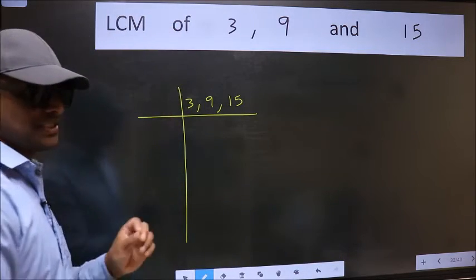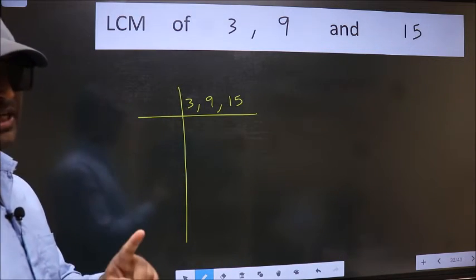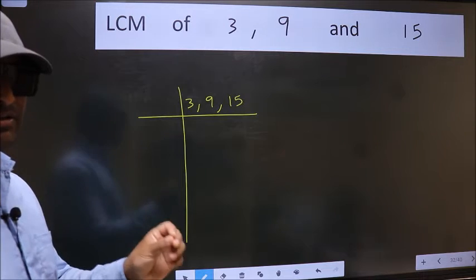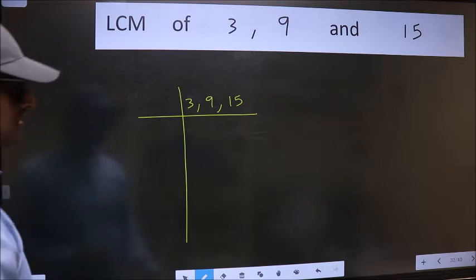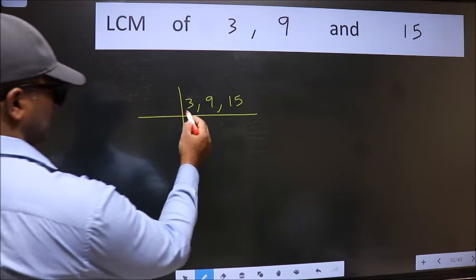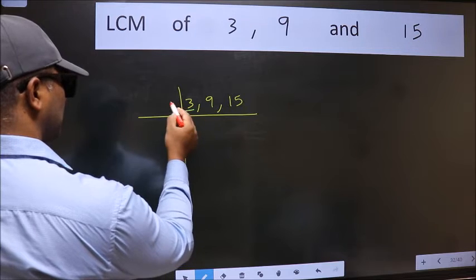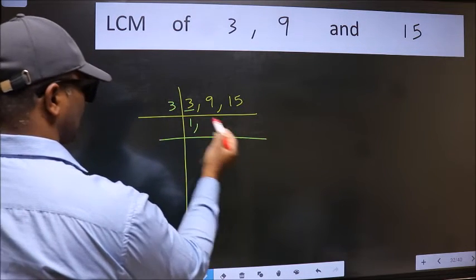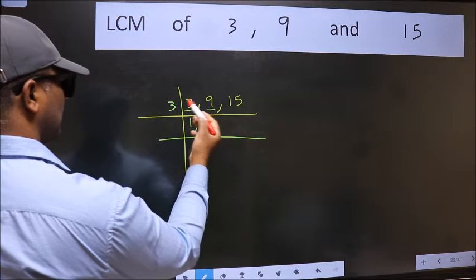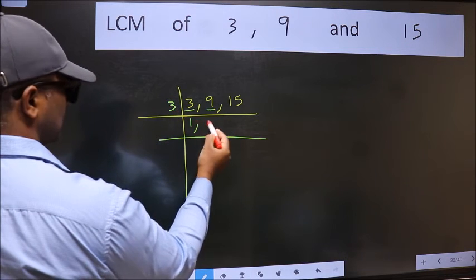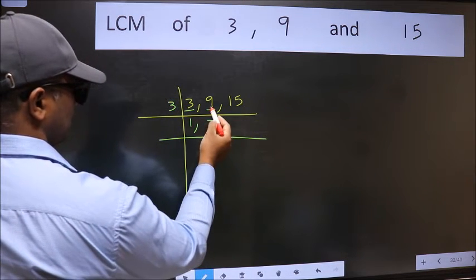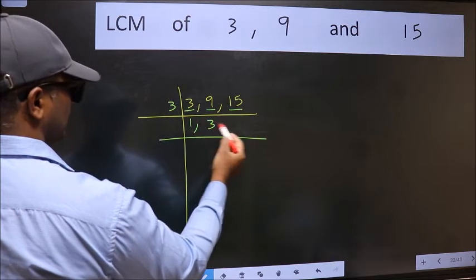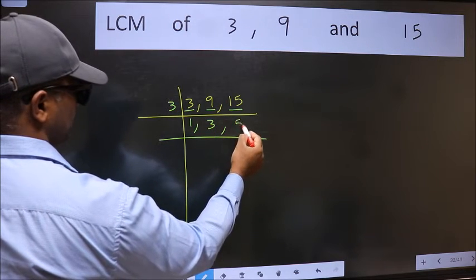This is your step 1. Now we should focus on the first number, which is 3. 3 is a prime number, so 3 divides 3 once. The other number 9 — when do we get 9 in the 3 table? 3 times 3 is 9. The other number 15 — when do we get 15 in the 3 table? 3 times 5 is 15.